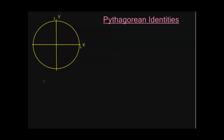The first one is our base Pythagorean identity, and this one you will probably end up memorizing just because you will see it so often. It comes from the fact that our unit circle has an equation of x squared plus y squared equals one. For any point (x, y) on the unit circle that satisfies this equation, I can define my trigonometric functions: cosine equal to x and sine equal to y, for any value of t.